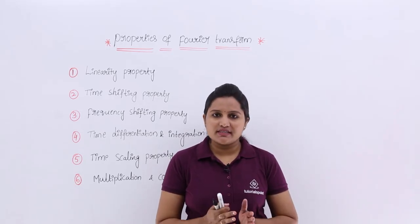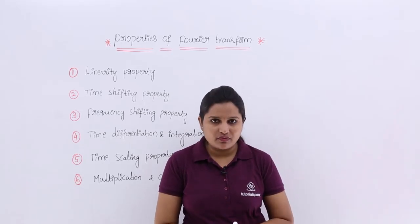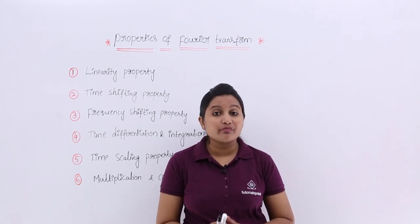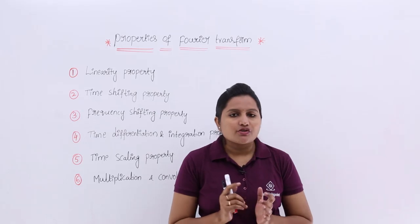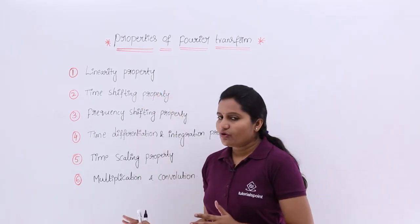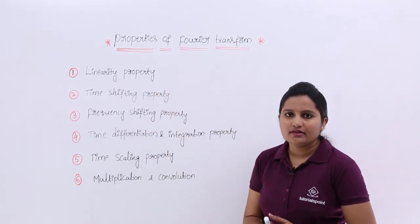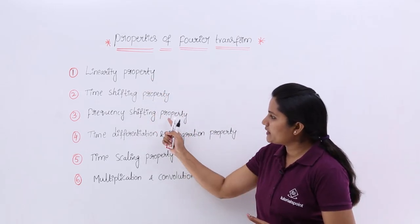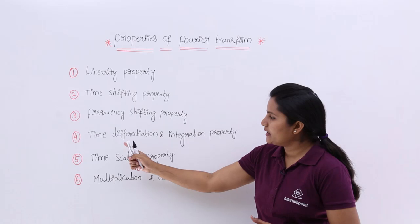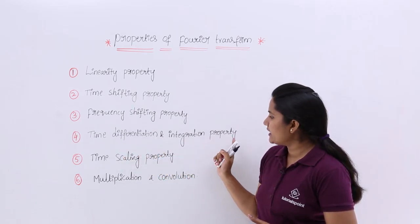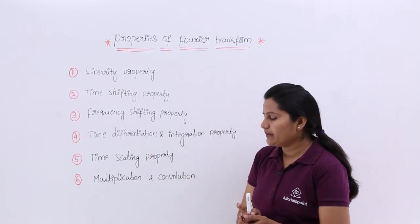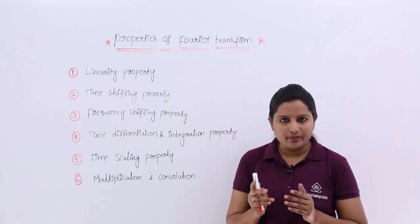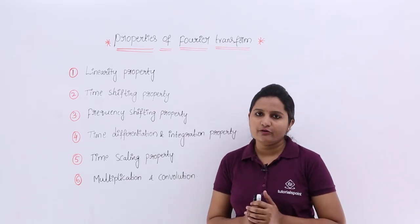In this video we are going to list the properties of Fourier transform and discuss the first property, that is the linearity property. Here is a list of very important properties: linearity property, time shifting property, frequency shifting property, time differentiation and integration property, time scaling property, and multiplication and convolution properties — these are all six very important properties included in Fourier transform.